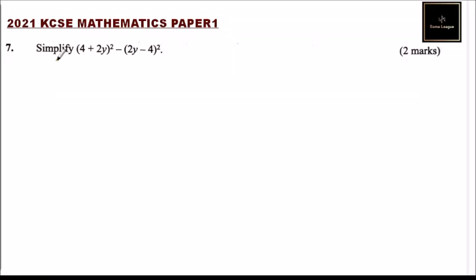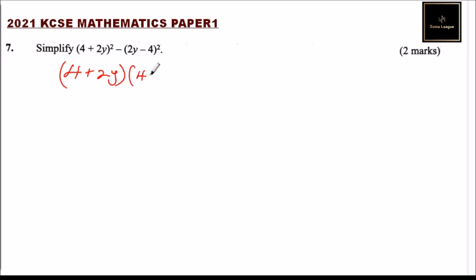Question number seven: you are asked to simplify (4 + 2y) squared minus (2y - 4) squared. We can simplify by expanding, so we write this as (4 + 2y)(4 + 2y) minus (2y - 4)(2y - 4).